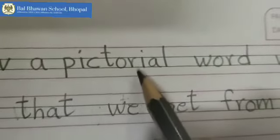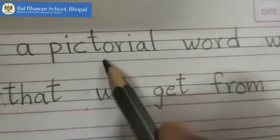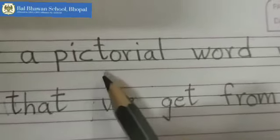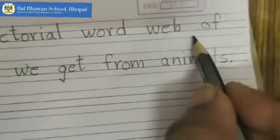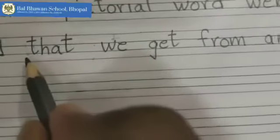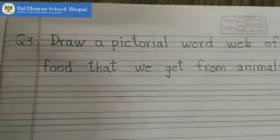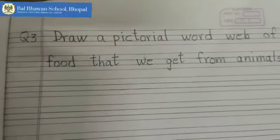Draw a pictorial word web — that means you have to draw pictures of the food items. It is a pictorial word web of food that we get from animals. Remember, we learned about the sources of food as plants and animals.